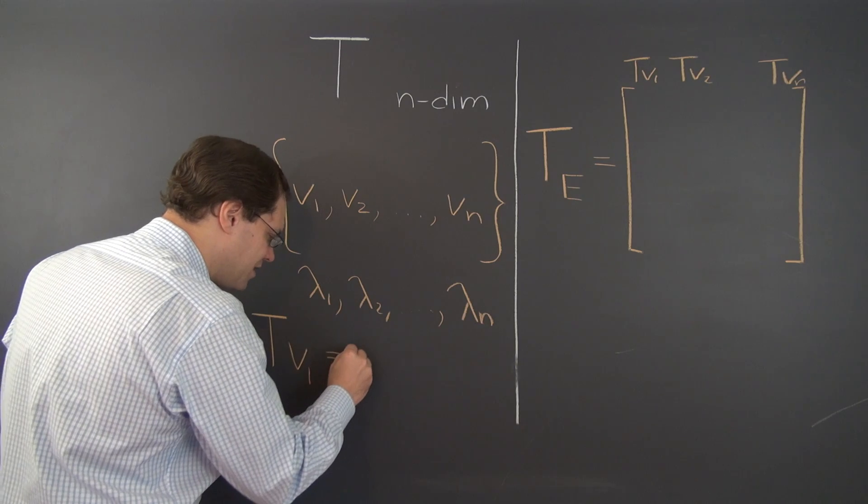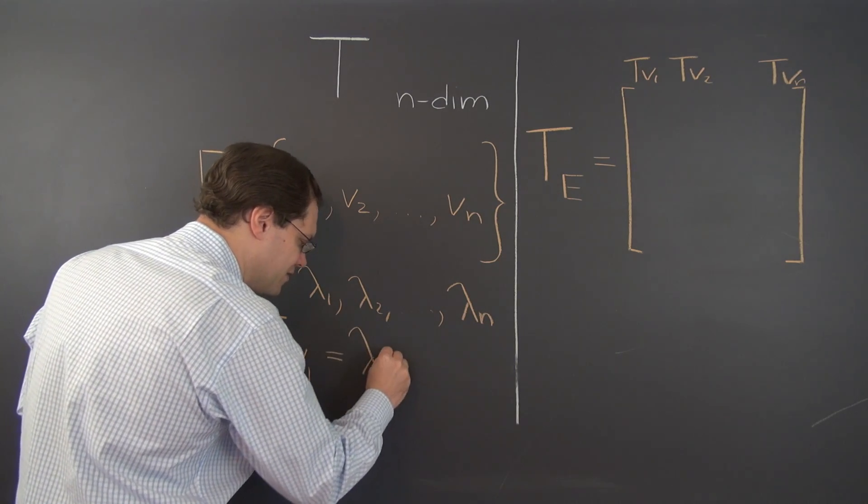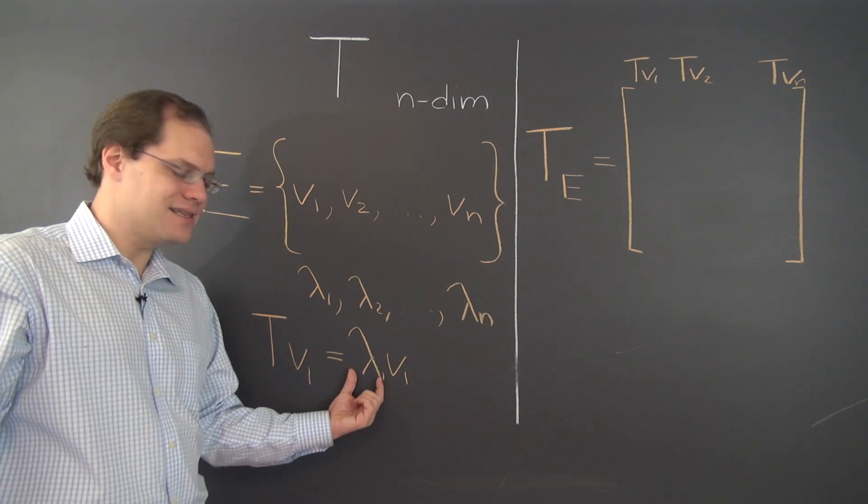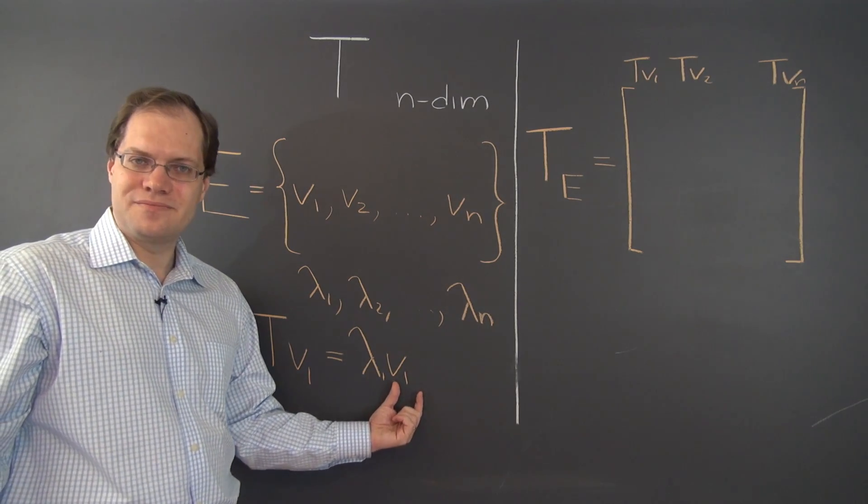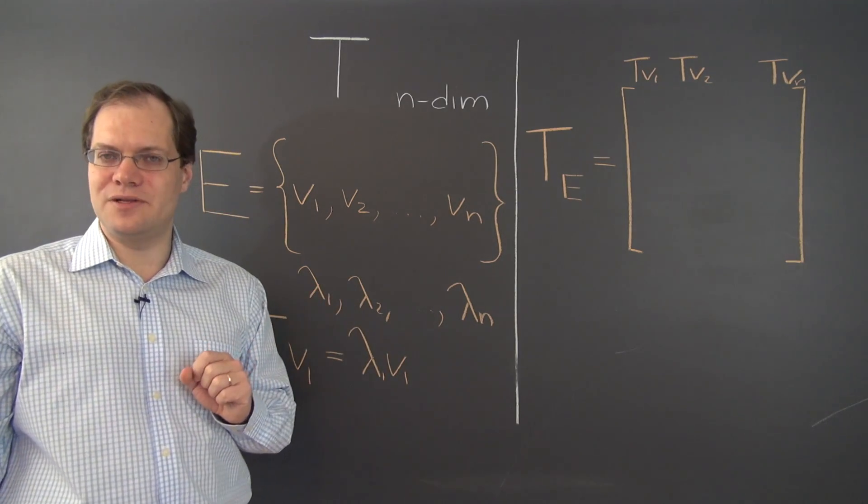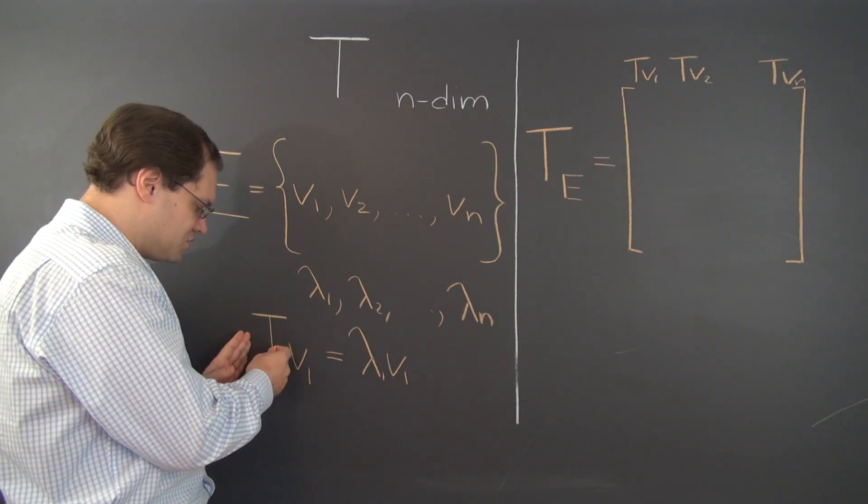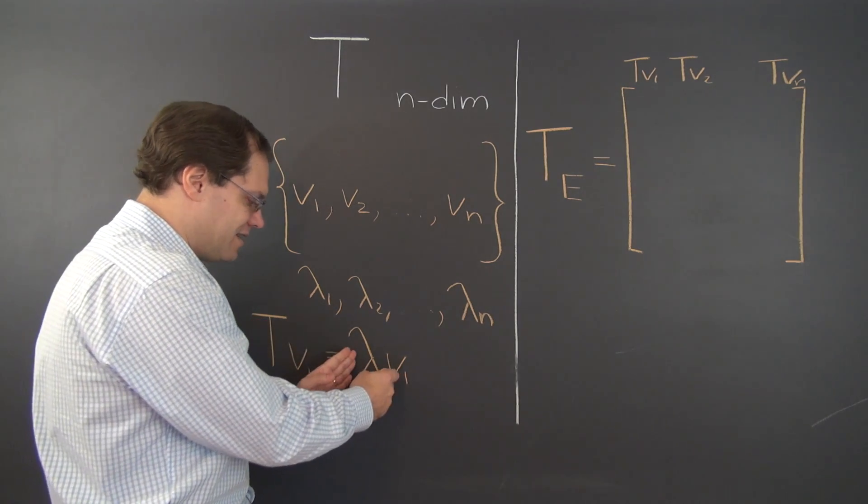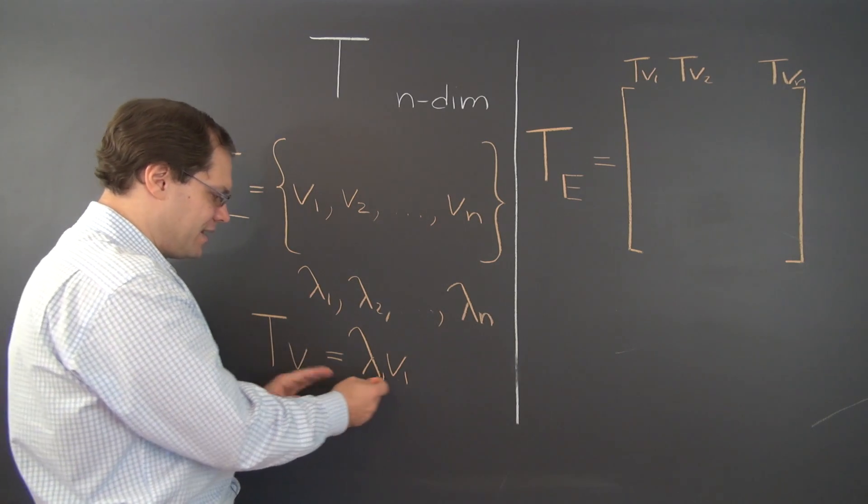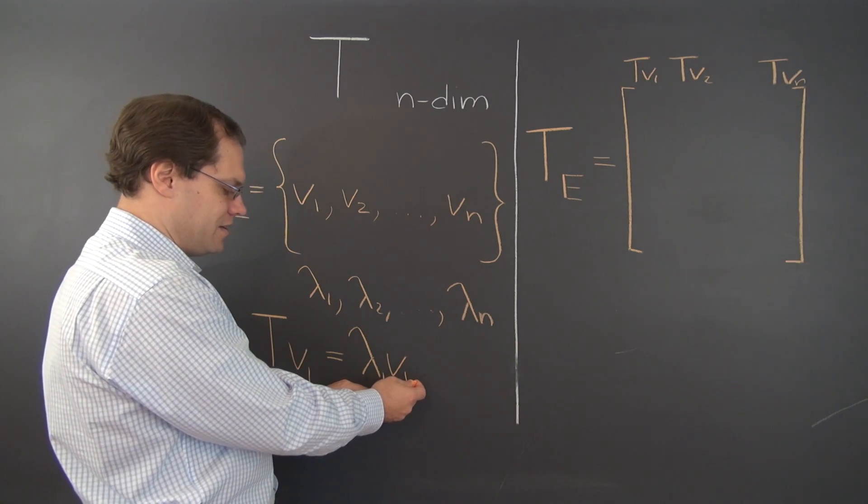We know that T of V1, by the very definition of what it means to be an eigenvector, is lambda 1 times V1. Because being an eigenvector corresponding to the eigenvalue lambda 1 means that when you apply the transformation to this vector, you get this multiple of the input vector itself. So T of V1 actually equals lambda 1 times V1.